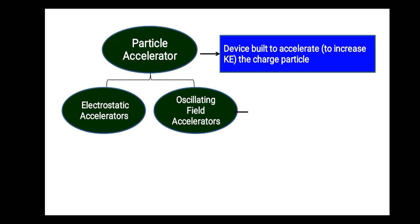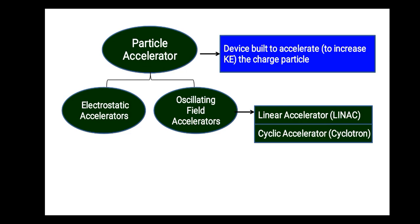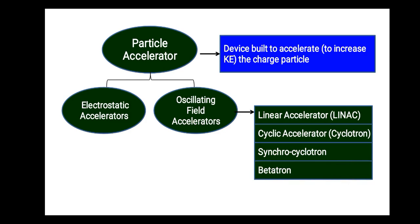Some examples of oscillating field accelerators are linear accelerator, commonly called linac, cyclic accelerator also called cyclotron, synchrocyclotron that is the advanced version of cyclotron, betatron, etc.